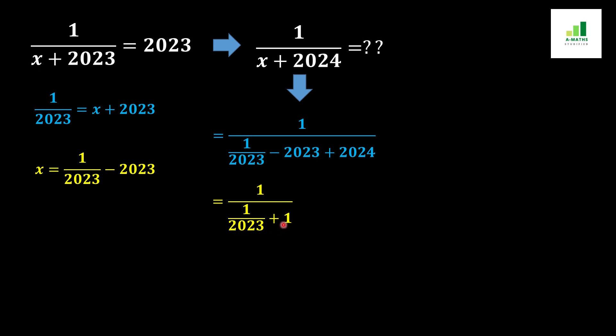By taking LCM, for this purpose we should multiply this 2023 from this 1 and we will get 1 plus 2023 over 2023 in the denominator and the numerator will remain the same.